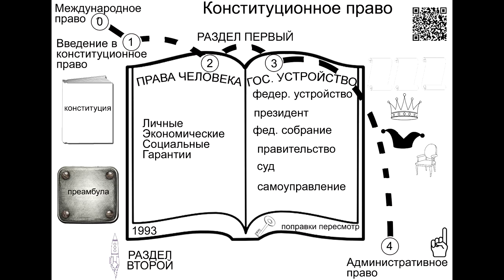According to the spheres of public relations, constitutional rights and freedoms are divided into the following groups. First, civil or personal rights: the right to life, security, dignity, freedom and personal inviolability, private life, personal and family secrets, protection of honor and good name, inviolability of the home, determination of national identity, freedom of movement, conscience and religion, thought and speech. Second, political rights: rights to association, peaceful assembly, meetings, demonstrations and other public demonstrations, participation in government, and the right to appeal. Third, economic, social and cultural rights: free participation in economic activities, private property, work, protection of motherhood and childhood, social security, housing, health and medical care, a favorable environment, education, and freedom of creativity.